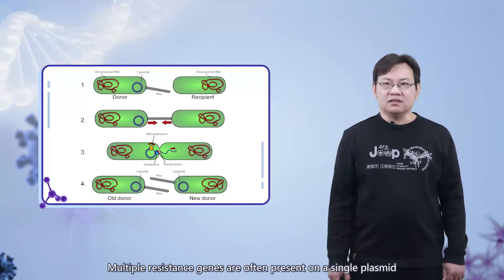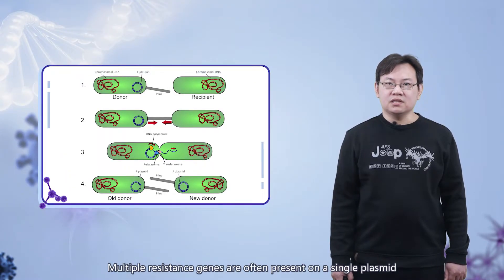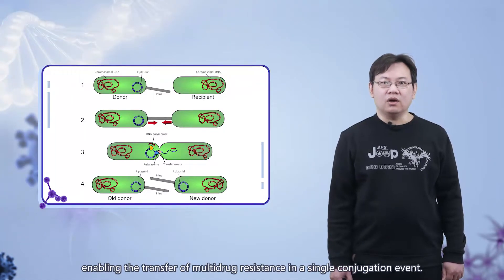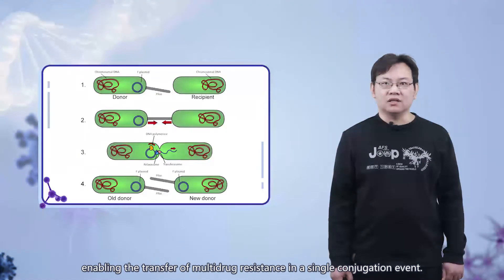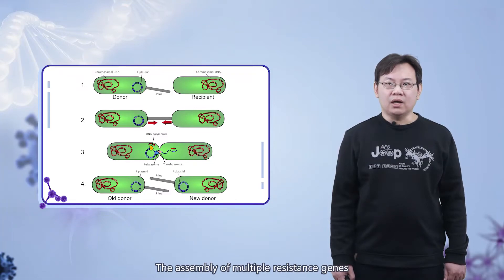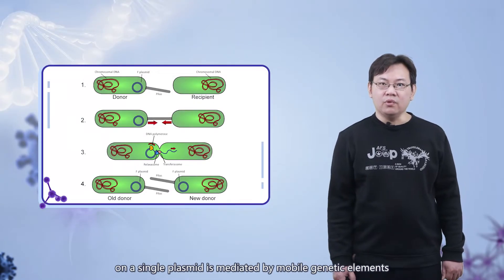Multiple resistance genes are often present on a single plasmid, enabling transfer of multiple resistance genes in a single conjugation event. The co-assembly of multiple resistance genes on a single plasmid is mediated by mobile genetic elements.